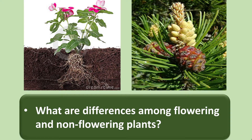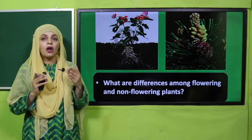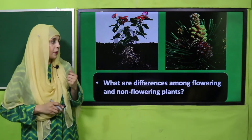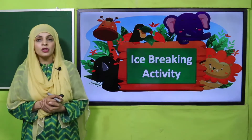Flowering plants have flowers on them; non-flowering plants do not have flowers. Flowering plants have seeds for reproduction; non-flowering plants do not have seeds — they have spores, or when they do have seeds, they are naked seeds. These are some of the differences between flowering and non-flowering plants.